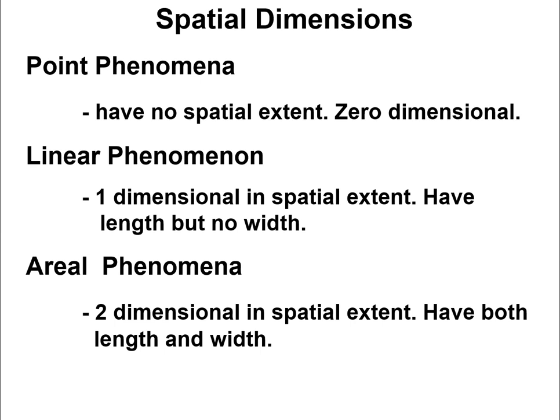Moving into more detail about spatial data — we have spatial dimensions. There are three different kinds of phenomena on the Earth's surface. The first is a point phenomenon, which has zero spatial extent and zero dimensions — it's a single point on the map. Then there's a linear phenomenon, which has one-dimensional spatial extent: it has a length but no width. Then there's the aerial phenomenon, which is two-dimensional and has both length and width. Think: points, lines, and areas.